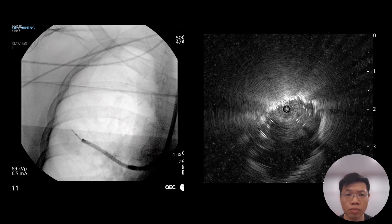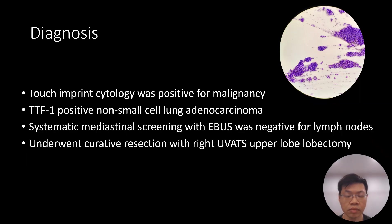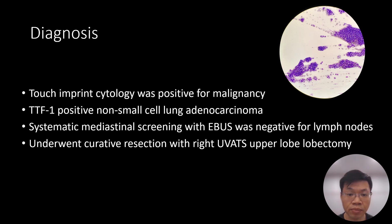We used an MP190 scope to enter as distally as we could into the airway. Here you can clearly see the image of the nodule on radial EBUS corresponding to the fluoroscopic image. Four forceps biopsies were taken of the nodule, and touch imprints were performed for rapid on-site evaluation. The touch imprint cytology pictures were positive for malignancy. The patient was diagnosed with TTF1-positive non-small cell lung adenocarcinoma. Systematic mediastinal screening was performed with EBUS and was negative for any lymph nodes. She has since undergone curative resection with right upper lobe lobectomy.